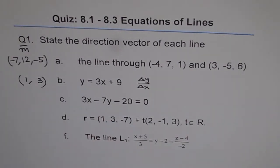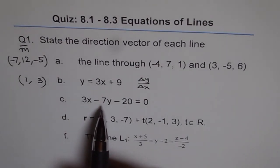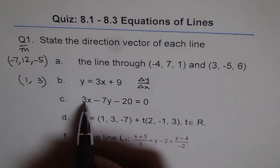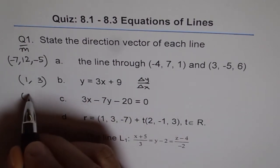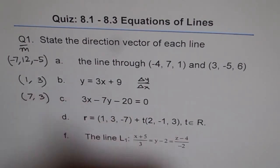This equation is in the scalar form. 3 and minus 7 are the normal to the vectors. They are not the direction vectors. But direction vector is simple to find. Flip it and change one of the signs. Since minus 7 is already negative, we will make this position plus. So the direction vector here is 7 and 3, correct?